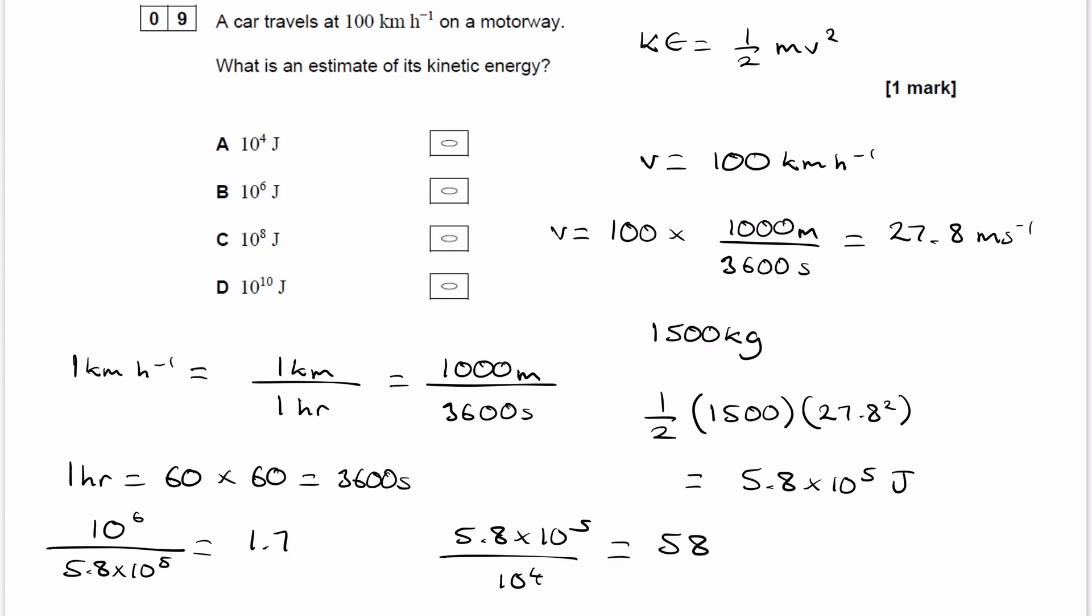So what we can see from these two numbers is that 5.8 times 10 to the 5, if you multiply that by 1.7, you end up with 10 to the 6. And if you divide this by 58, you end up with 10 to the 4. So it's therefore closer to 10 to the power of 6 than it is 10 to the power of 4, so our answer would be B.